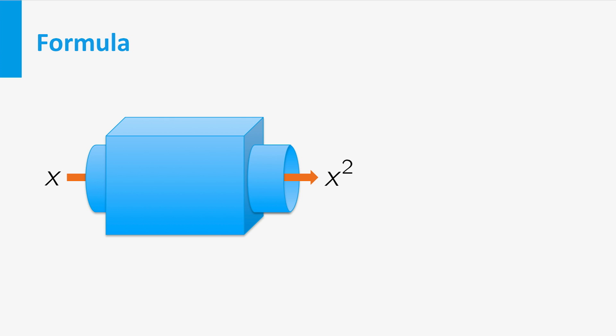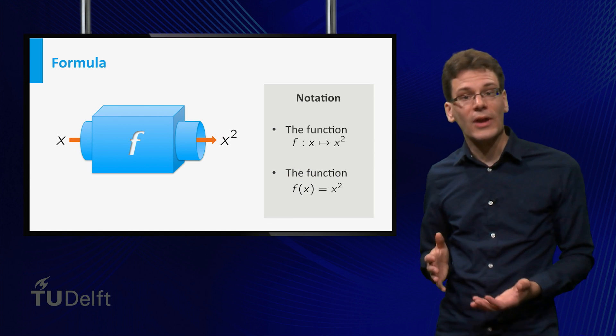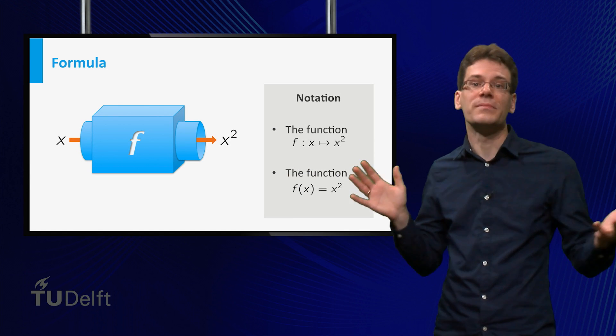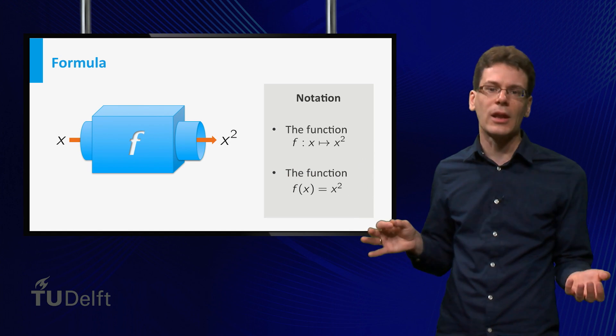How to denote such a function? First we have to give the function a name, a standard name is f. One way to denote this function is f colon x to x squared. Here f denotes the function name, x is the variable denoting the input, and x squared is the formula that describes the output. Another common way to denote a function is by writing f(x) equals x squared. Sometimes you may even hear the function x squared, although this is a bit sloppy.